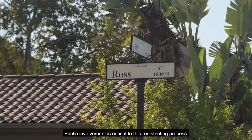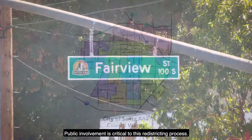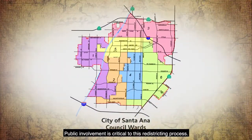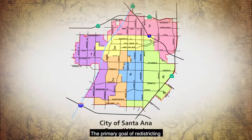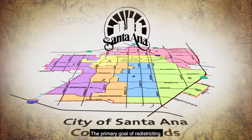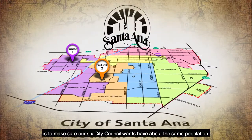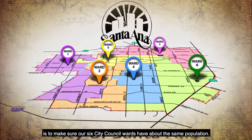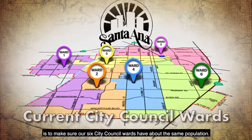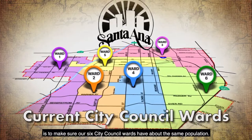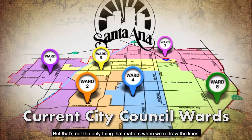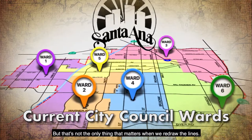Public involvement is critical to this redistricting process. The primary goal of redistricting is to make sure our six City Council wards have about the same population, but that's not the only thing that matters when we redraw the lines.